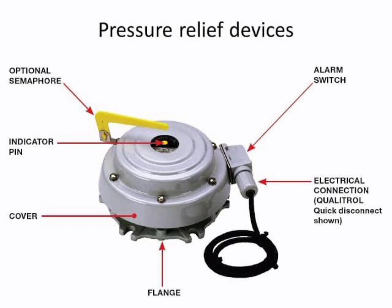The PRV operates by using a spring-loaded valve set to open at a specific pressure. When the pressure inside the tank exceeds this set point, the valve opens and releases the excess pressure to the atmosphere, closing again when the pressure drops below the set point. The set point of the PRV can be adjusted to suit the specific requirements of the transformer and the electrical power system. It is important to regularly check and maintain the PRV to ensure proper functioning. It is common practice to install the PRV in combination with other protection devices such as an oil surge relay and temperature protection to provide a comprehensive protection system.